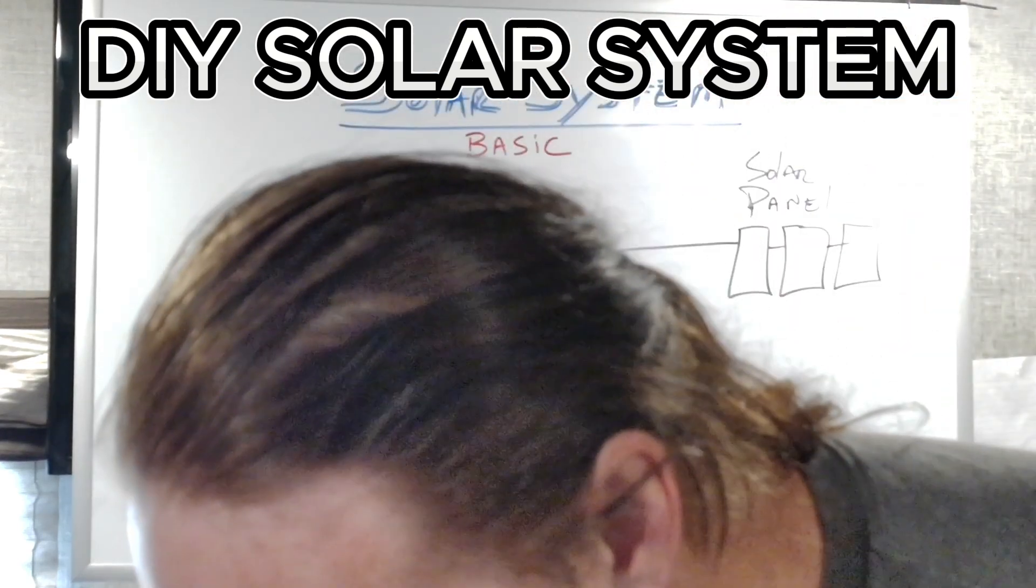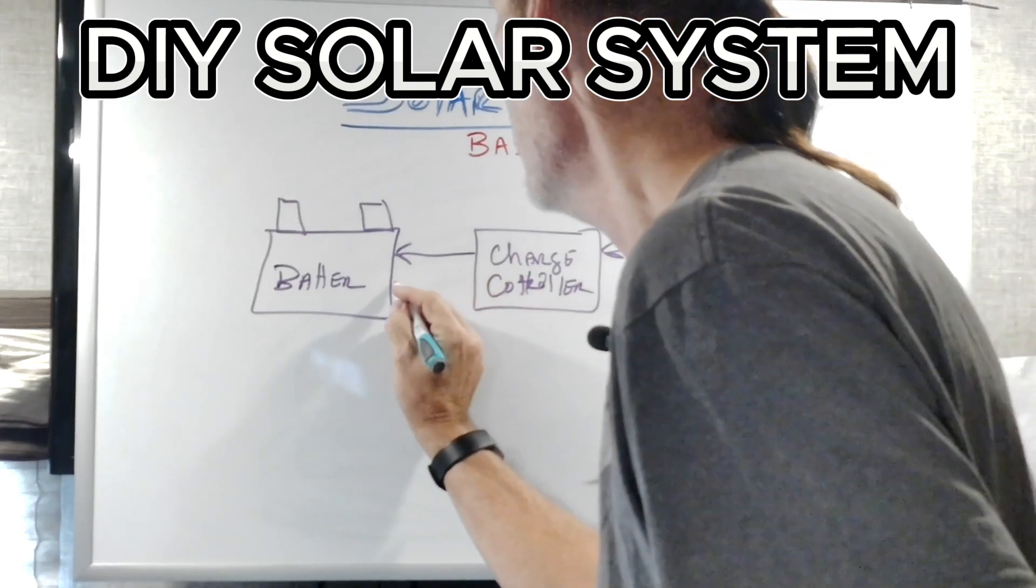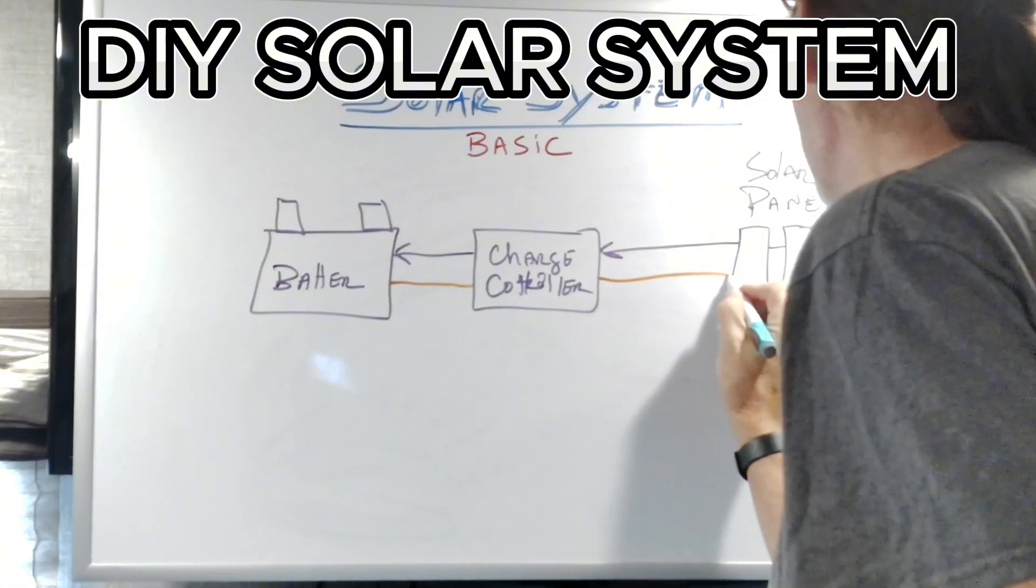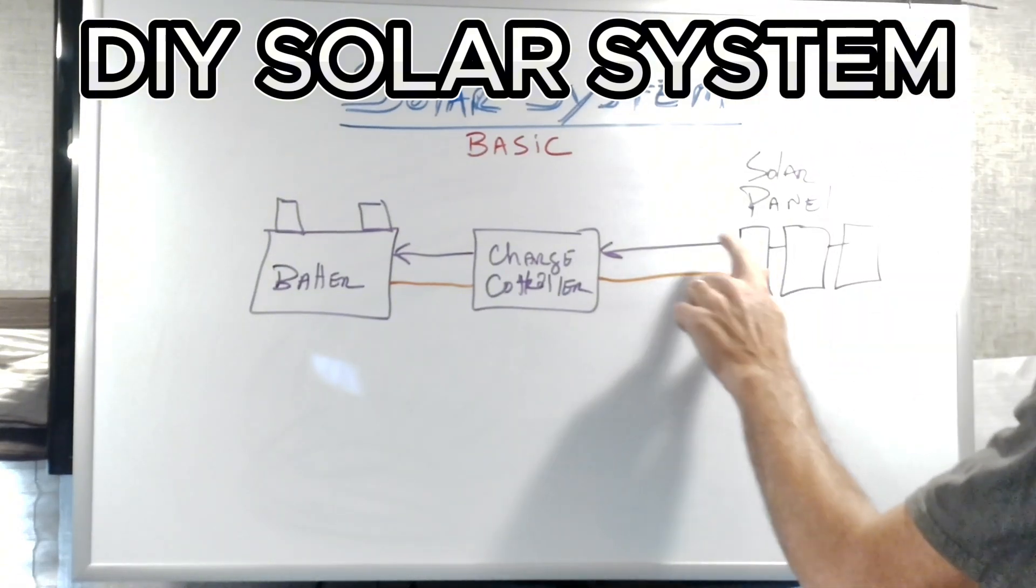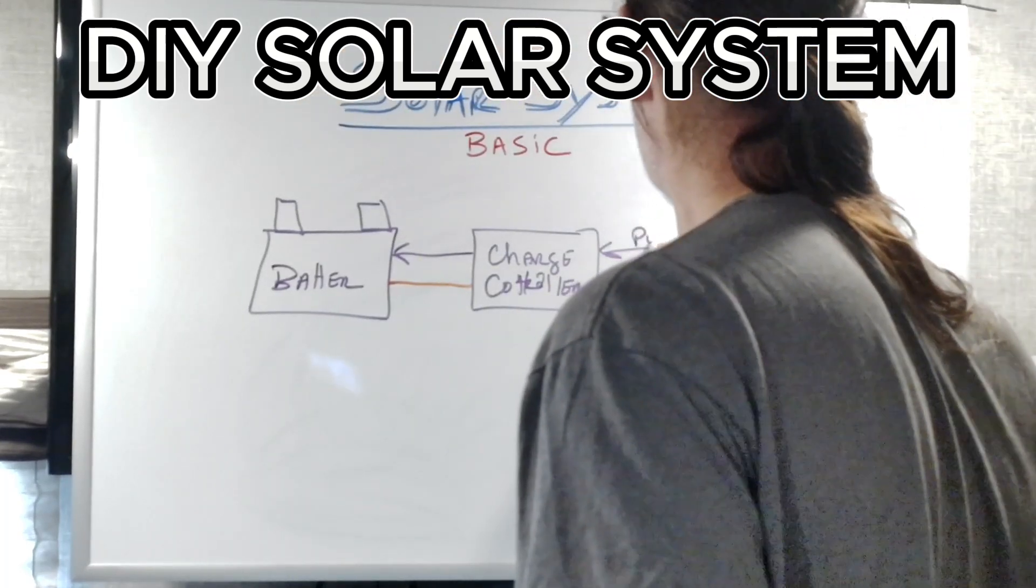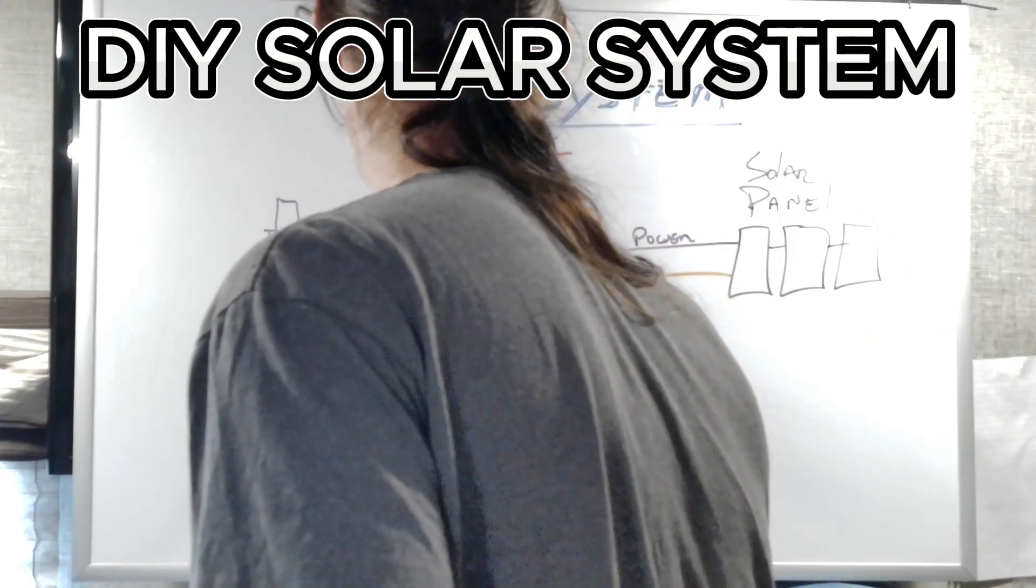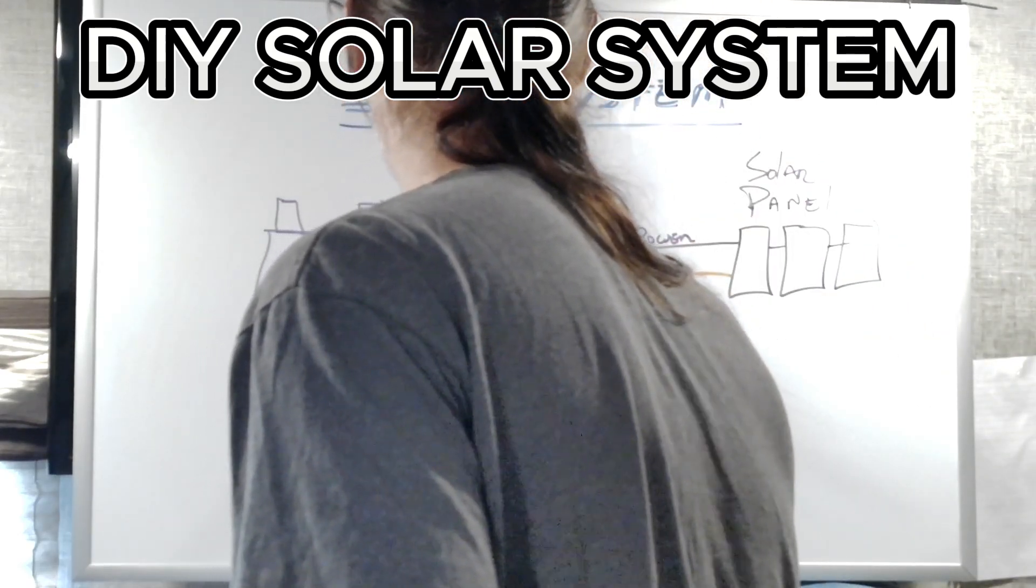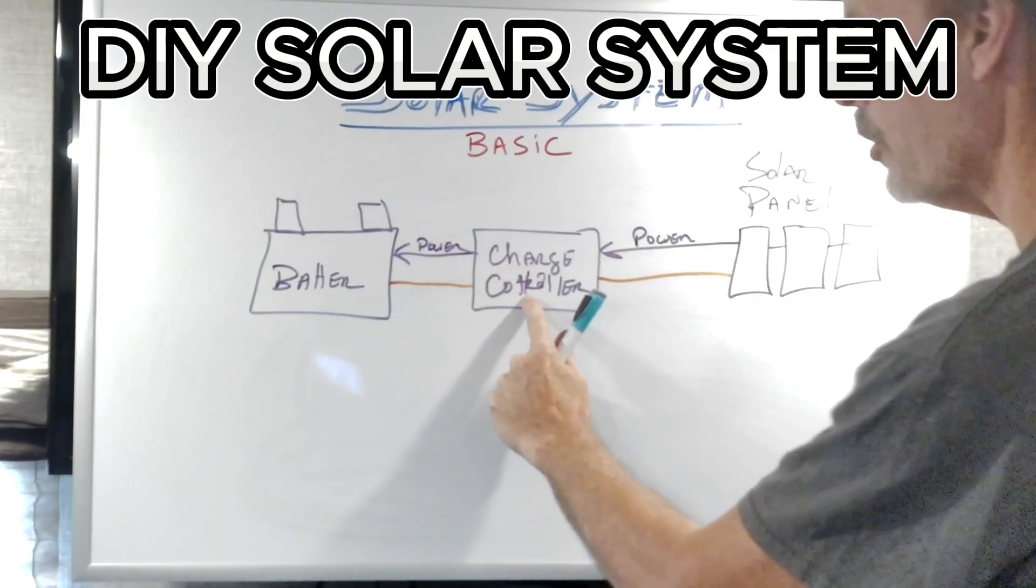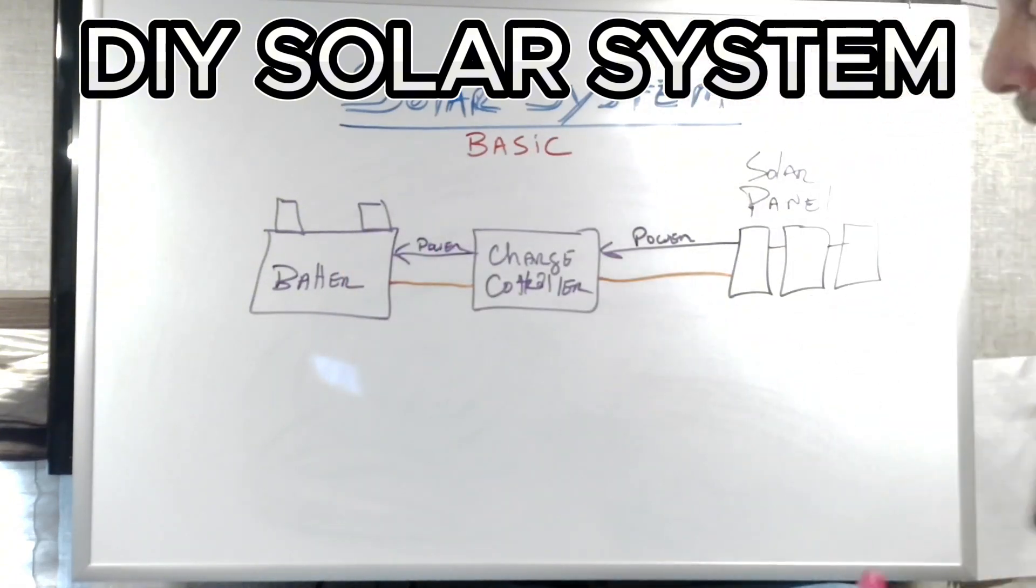The connections for this, I'm going to put the connections in orange. So the charge controller is connected to the battery and the charge controller is connected to this. It causes the power that is generated to come out of the solar panels and go through the charge controller, adapt it to whatever battery you have and place that energy in the battery.